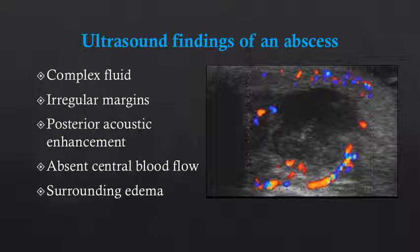Now let's shift gears and start to look at the ultrasound findings of an abscess. An abscess is a complex fluid collection. It tends to have irregular or poorly defined margins. You often will see posterior acoustic enhancement behind an abscess because an abscess is fluid filled. There should not be central blood flow within an abscess — masses tend to have central blood flow, which can help differentiate the two. Another characteristic of an abscess is surrounding soft tissue edema, caused by substantial inflammation of the surrounding tissues from the presence of infection.